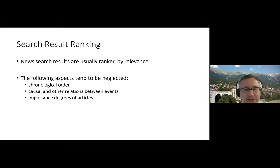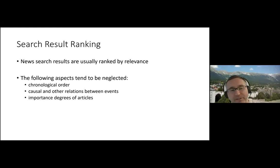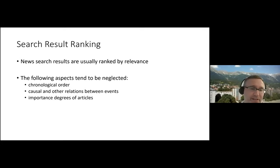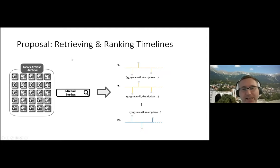There can be chronological or causal relations between news articles, and different importance degrees of news articles exist. If we rank news by relevance, at the top of the ranked list we might have a not-so-important but relevant article, because importance degree is not explicitly considered — only relevance is considered. But there are many other factors for news which should be utilized.